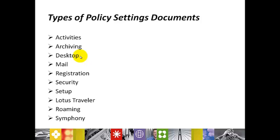Desktop settings include, for example, a custom corporate welcome page, smart upgrade options, a default replication schedule, bookmark management and updates, and user preferences. You can set up those settings under Desktop. The Mail setting document specifies the settings that control end user field values and modification.